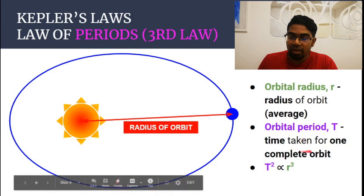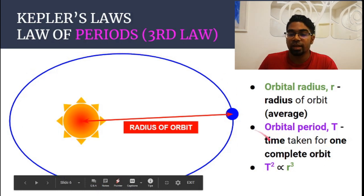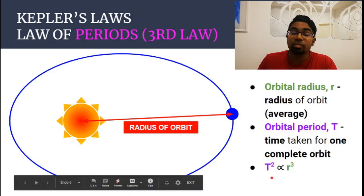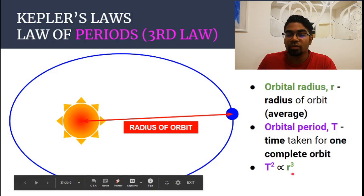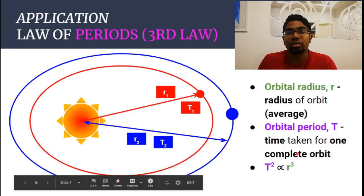Orbital period is the time taken for one complete orbit — the time for the planet to make one full orbit around the sun. Kepler's third law states that the square of the orbital period is directly proportional to the cube of the orbital radius. This relationship is very useful in calculations.